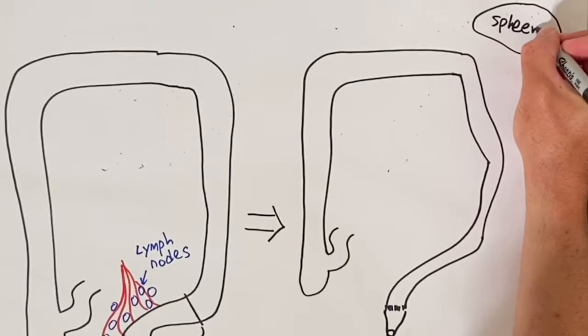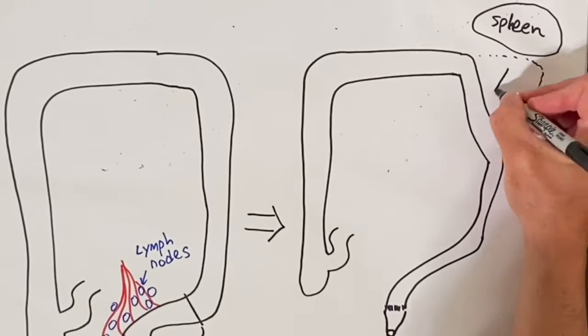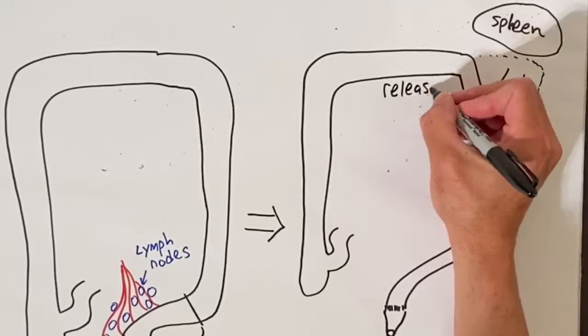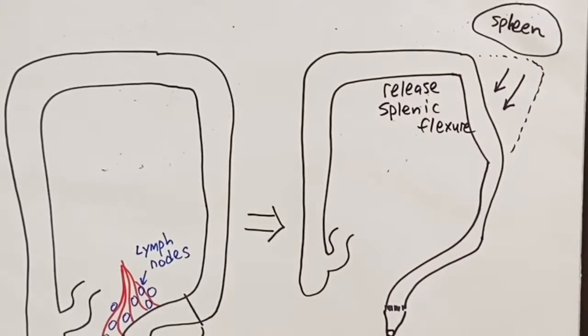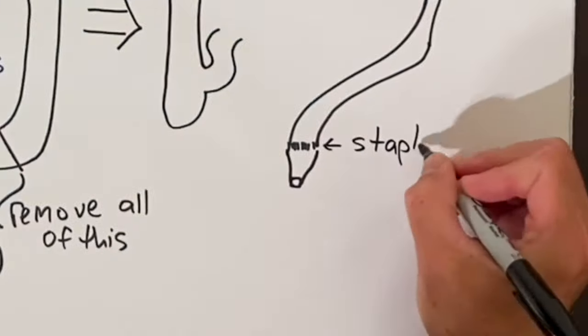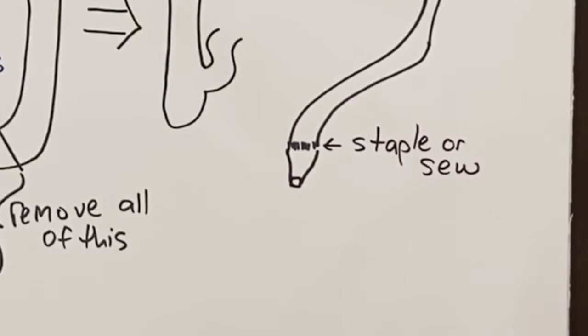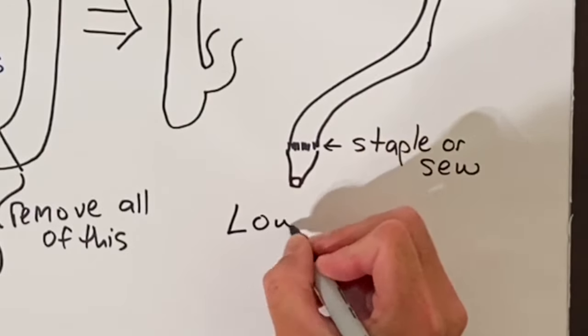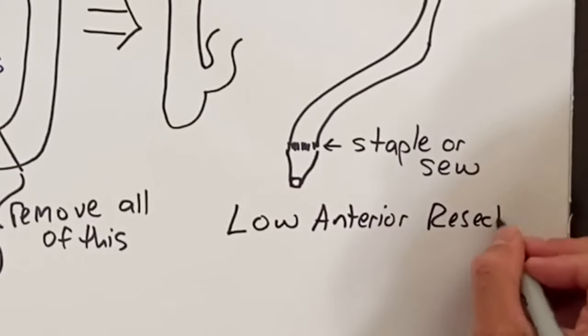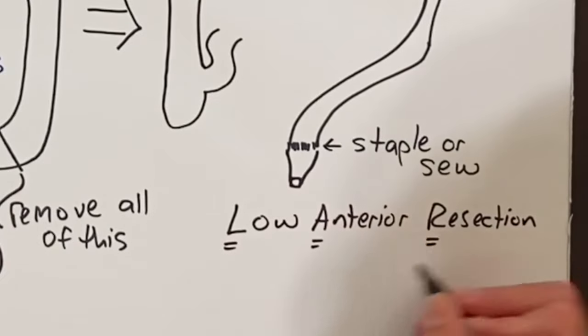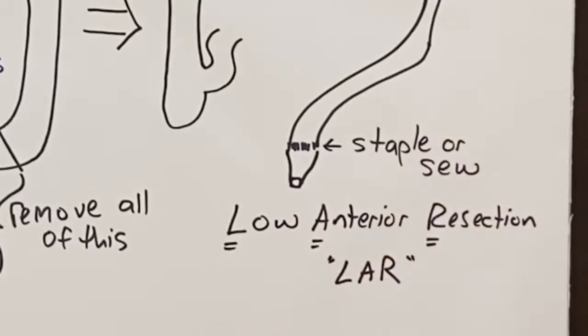In order for the remaining colon to reach into the pelvis to reconnect to the remaining rectum, we have to release attachments at the splenic flexure and the left descending colon. The colon is reattached to the stump of rectum left with either a stapling device or by sewing by hand. This surgery is called a low anterior resection, or abbreviated as LAR.